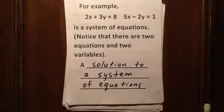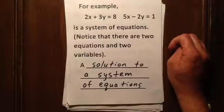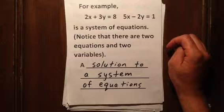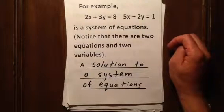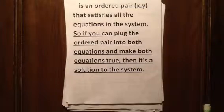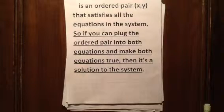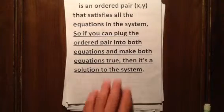For example, suppose we were given the two equations 2x plus 3y equals 8 and 5x minus 2y equals 1. This is a system of equations — there are two equations and two variables, x and y. A solution to a system of equations is an ordered pair (x, y) that satisfies all the equations in the system. In other words, if you plug the ordered pair into both equations and make both equations true, then it's a solution to the system.